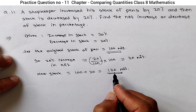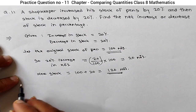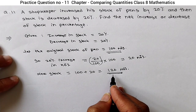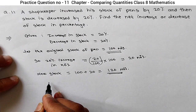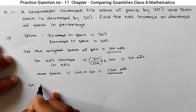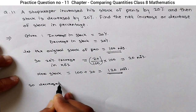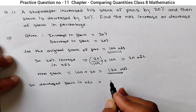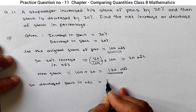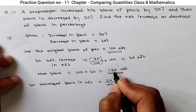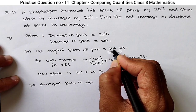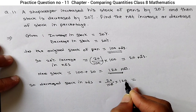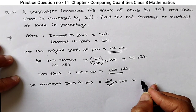Now this increased stock is decreased by 20%. So let's calculate the decrease in numbers. The decrease in stock in numbers equals 20 upon 100 into our current stock of 120 — it is not 100 anymore, it is 120. So we multiply by 120, and we get 24 numbers.